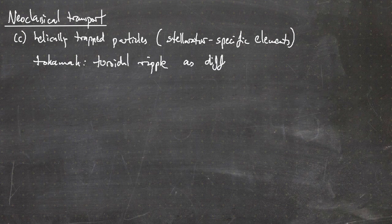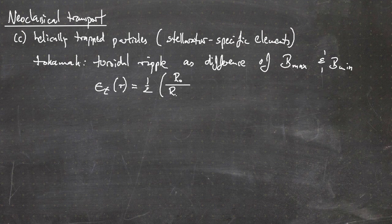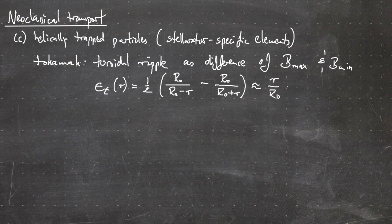The toroidal ripple can be understood as a difference of the maximum magnetic field strength and the minimum magnetic field strength along the field line. For the ripple, this can be described as ε_T as a function of R, being equal to one-half times (R₀ over R₀ minus r) — corresponding to the maximum magnetic field strength — minus (R₀ over R₀ plus r), corresponding to the minimum, which roughly equals small r over R₀, the aspect ratio ε.